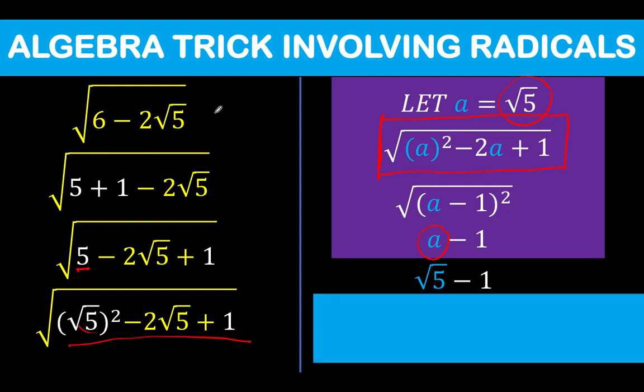Therefore, this original expression, the square root of 6 minus 2 square root of 5, is simplified as square root of 5 minus 1.